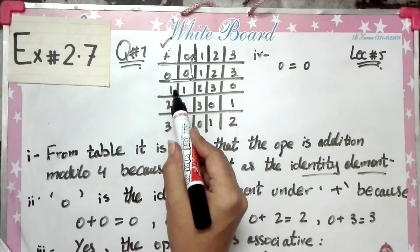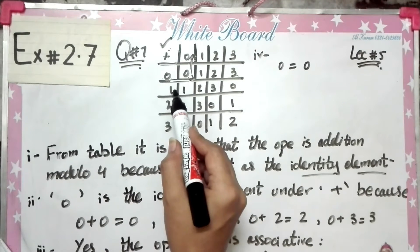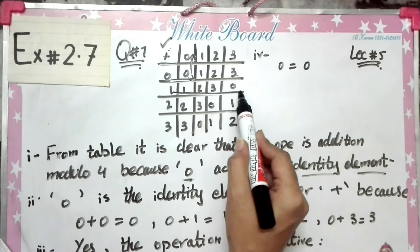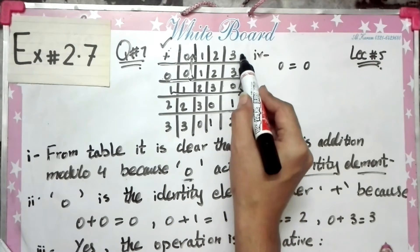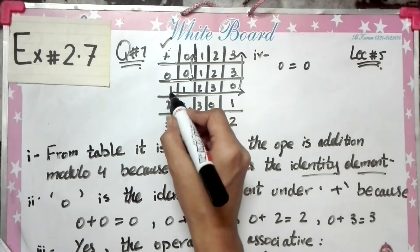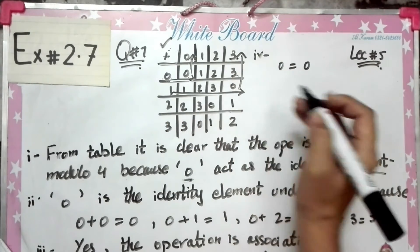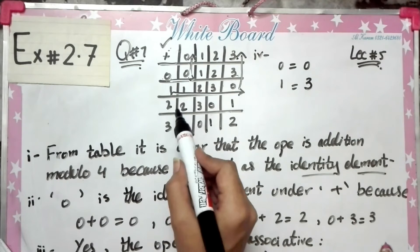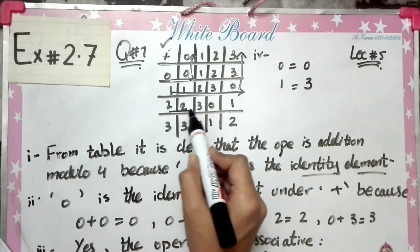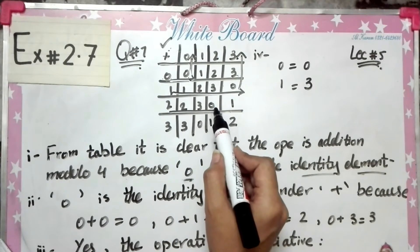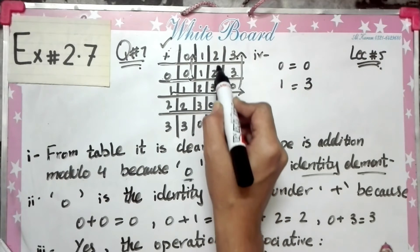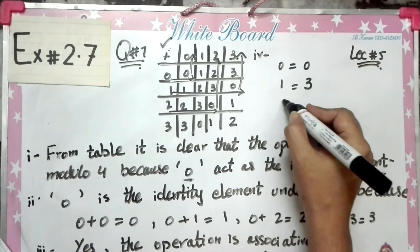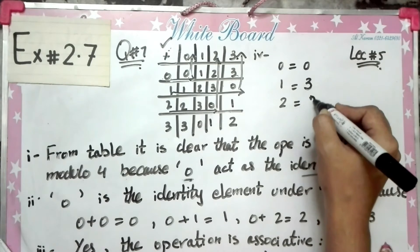Next, for 1: we start from row 1, look for the identity element 0, and see that 3 is written on top — so the inverse of 1 is 3. Next, for 2: we start from row 2, look for 0, and the inverse of 2 is 2.